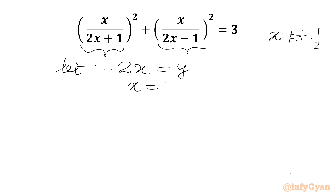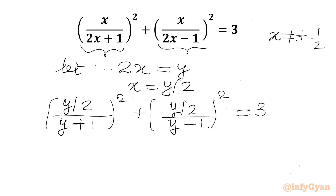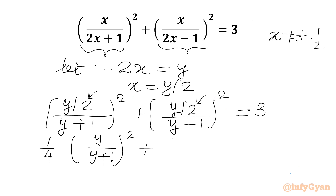So x will be equal to y over 2. Our equation will become: y over 2 divided by (y+1) whole square, plus y over 2 divided by (y-1) whole square, equal to 3. Taking the 2 out from the bracket puts it in the denominator as 4, giving us 1 over 4 times [y over (y+1) whole square] plus 1 over 4 times [y over (y-1) whole square] equal to 3.